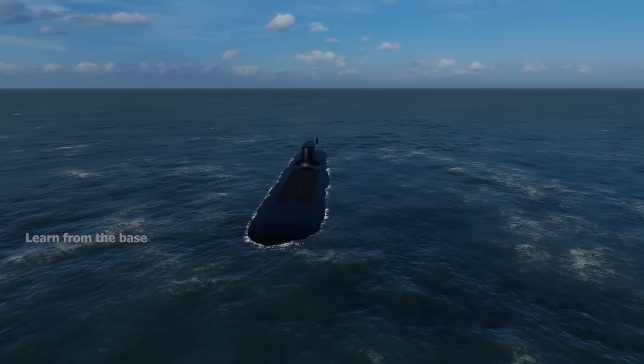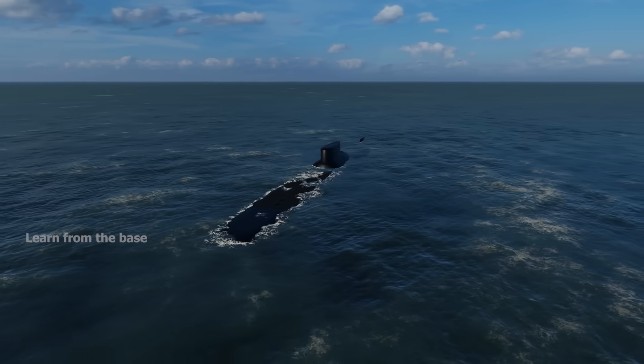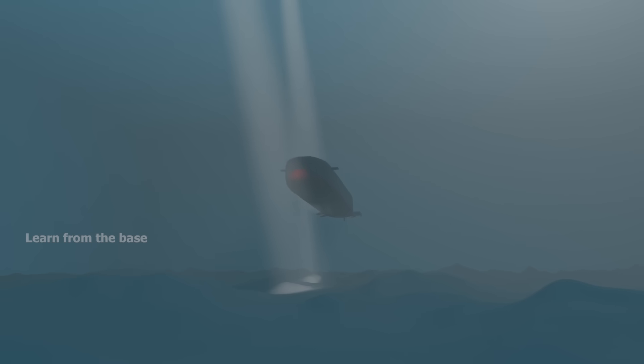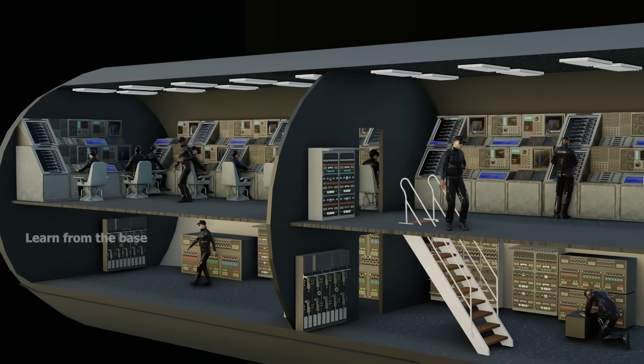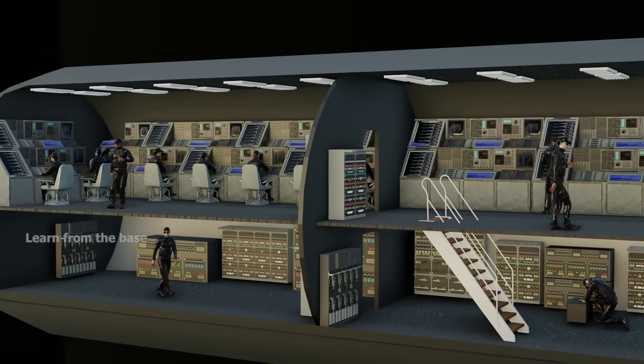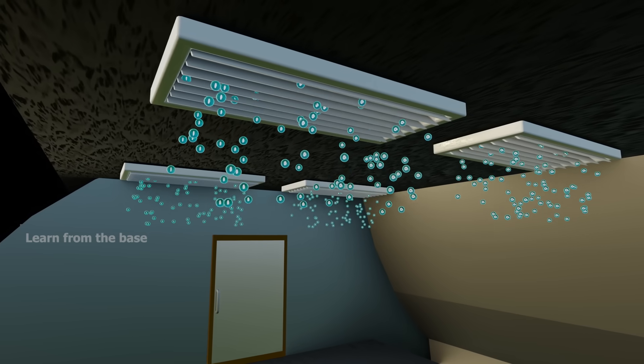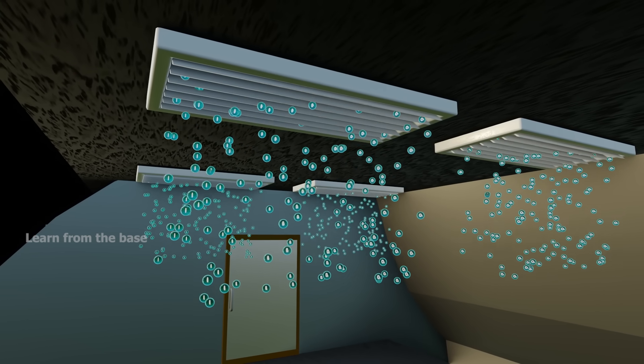Submarines are designed to stay underwater for up to three months at a time. All of you know there is no oxygen underwater, but how? How do submarines keep more than 100 people alive underwater? Let's understand how to create breathable oxygen on a submarine.